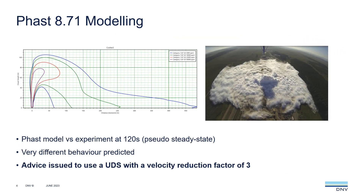When we tried to model this in FAST 8.71, we found it behaves nothing like what we see in the experiment. FAST predicts a vertical jet which goes quite a distance downwind, diluting all the way before touching down. We concluded that the exit velocity is much too high to reproduce the experiment and we issued interim advice to convert ruptures to user-defined sources and to reduce the velocity by a factor of three.